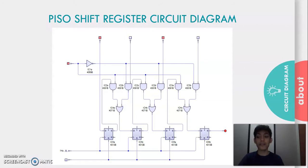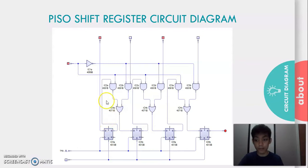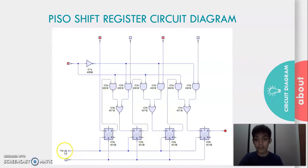The block diagram of a 4-bit parallel in serial out shift register will be shown in the following figure. This circuit consists of 4 D flip-flops which are cascaded, meaning the output of one flip-flop is connected as the input of the next flip-flop. All these flip-flops are synchronous with each other since the same clock signal is applied to each one.